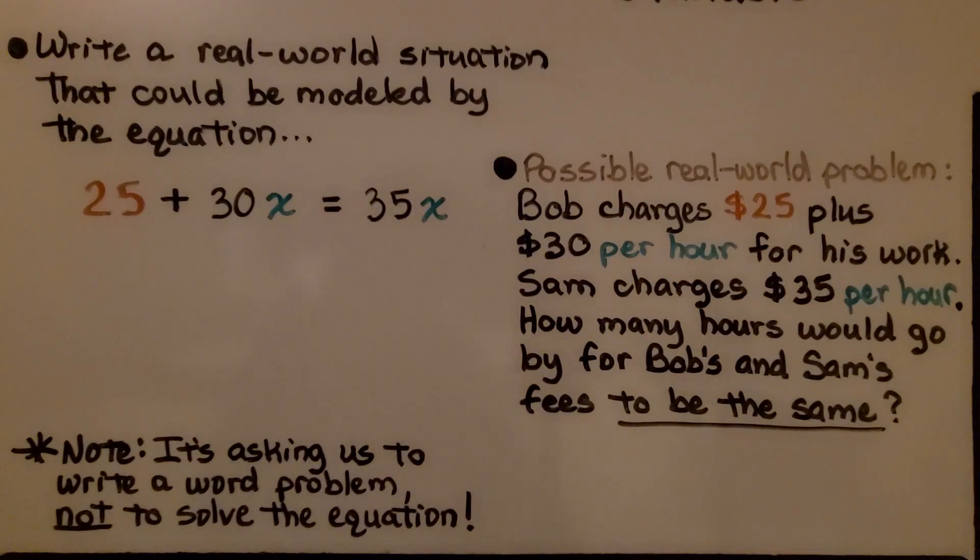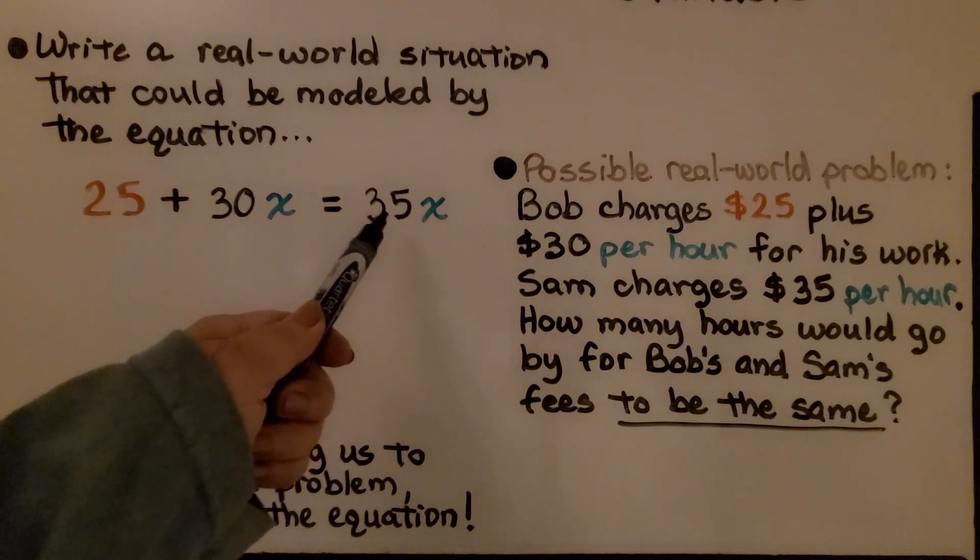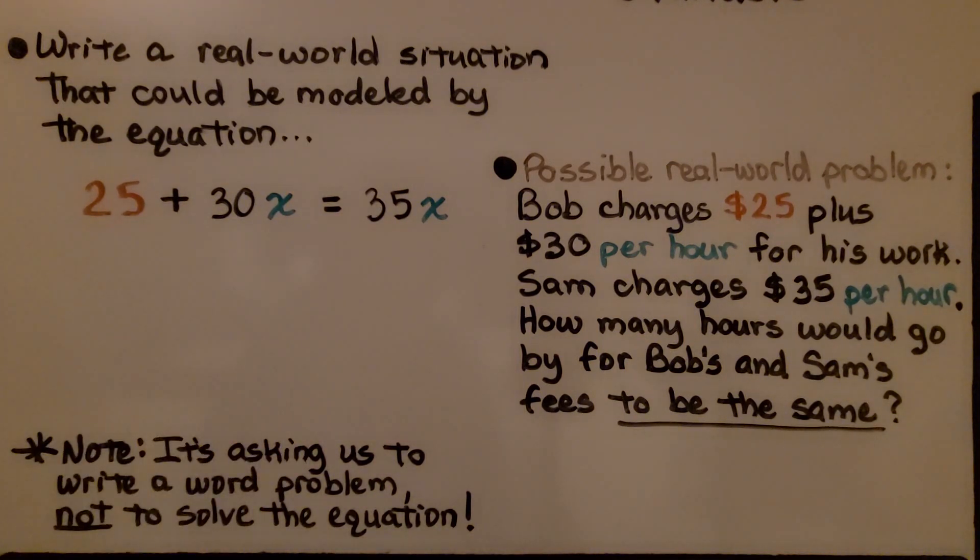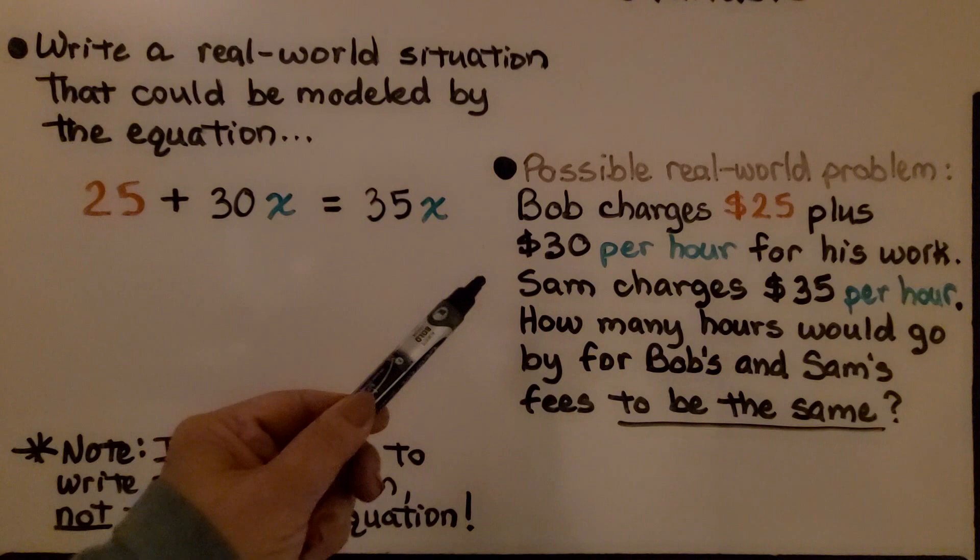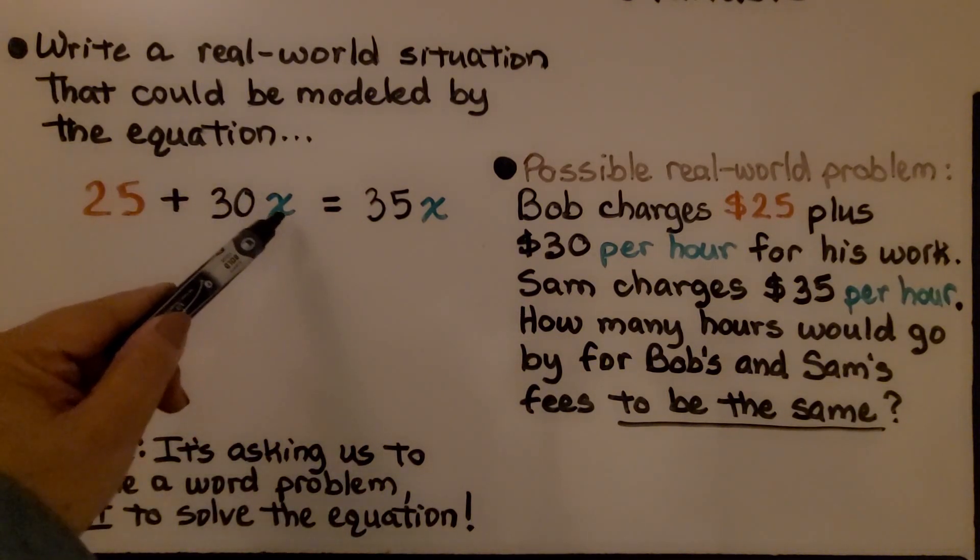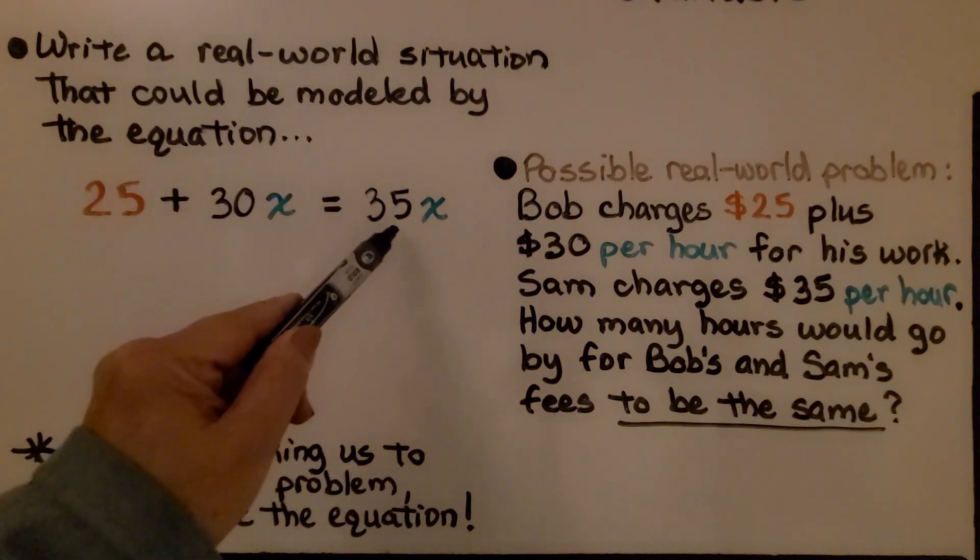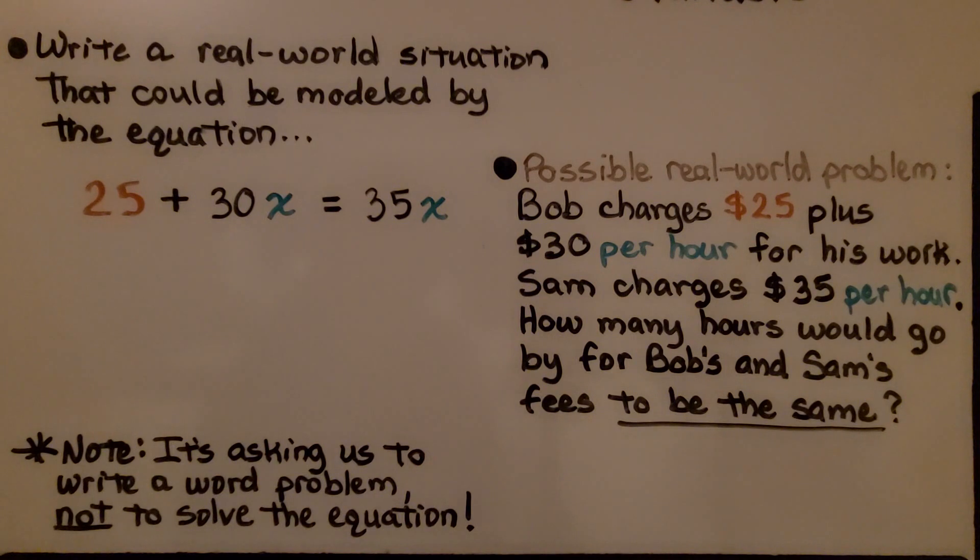So here it's telling us to write a real-world situation that could be modeled by the equation 25 plus 30x is equal to 35x. So I have a possible real-world problem. Bob charges $25 plus $30 per hour for his work. Sam charges $35 per hour. How many hours would go by for Bob's and Sam's fees to be the same?